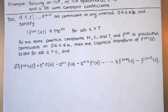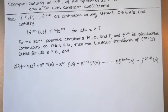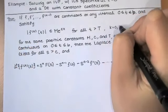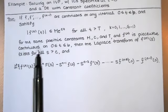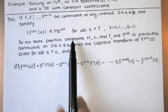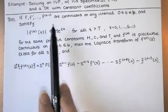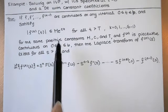Here's our theorem. It says that if f, f prime, all the way up to the (n−1)th derivative of f are continuous on any interval of the form t between zero and b inclusive, and all of those functions satisfy the inequality |f^(k)(t)| ≤ M·e^(ct) — meaning they are of exponential order — for k equals zero through n minus one, with the same positive constants M and c.